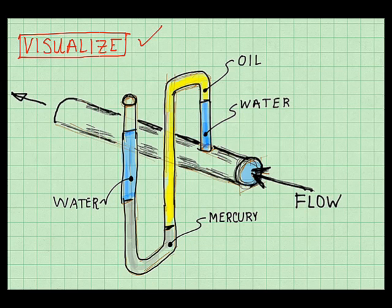Visualize means to picture the problem as it exists in the real world. I see water flowing through a pipe. Pressure in this water pushes water up the manometer tube. The water pushes on oil, which pushes on mercury, which then pushes on this water column. And this water column is open to ambient, so the pressure right here is zero gauge.